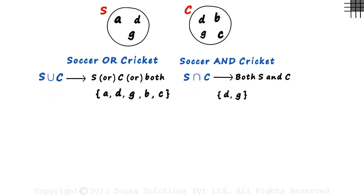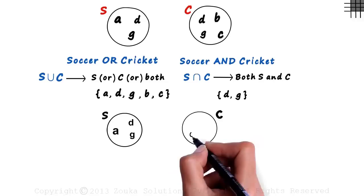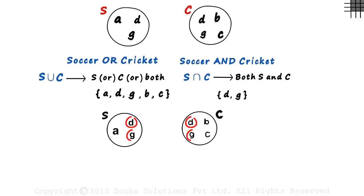This is set S with A, D, and G. And this is set C with D, G, B, and C. We can see that D and G are common to both the sets. So let's move set C to the left such that they overlap. They overlap since they have a few elements common to each of them. And yes, they are called overlapping sets.